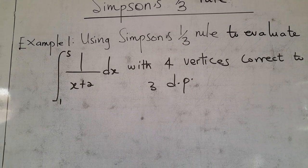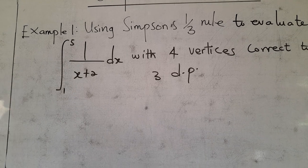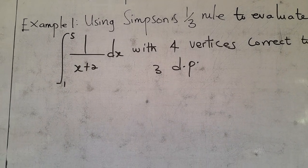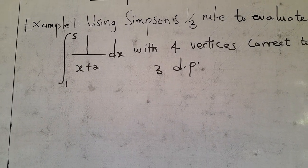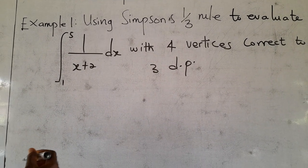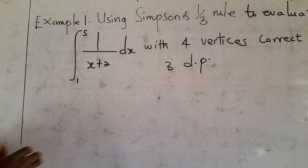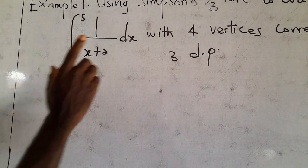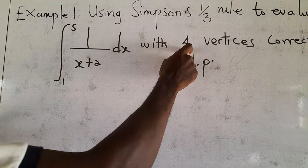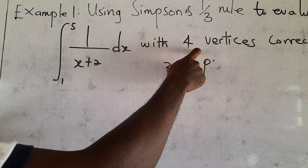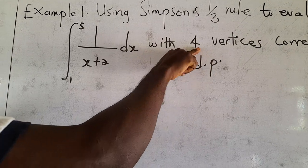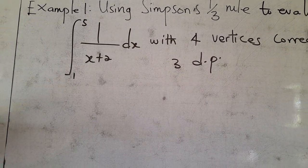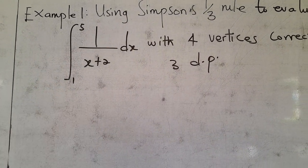Remember when we are doing numerical integration, the first thing we need to find is the interval difference, which is h. Simpson's 1/3 rule can only be used if the number of subintervals is even. We can see that 4 is even, so we can use Simpson's 1/3 rule here.